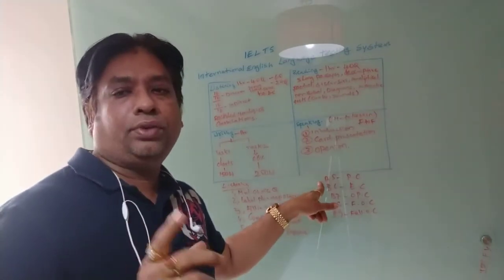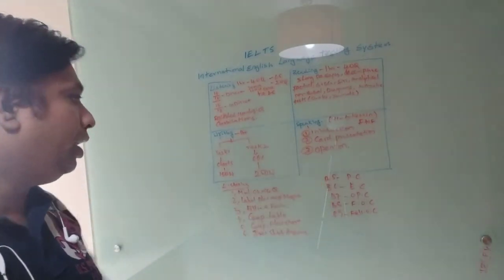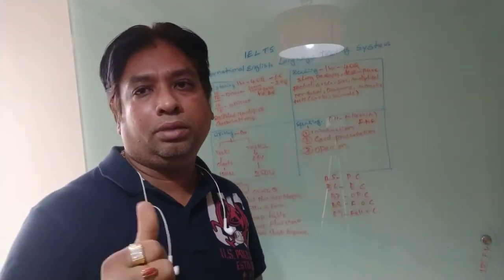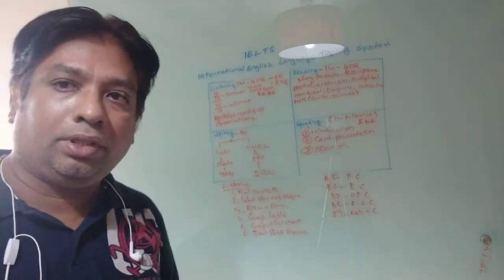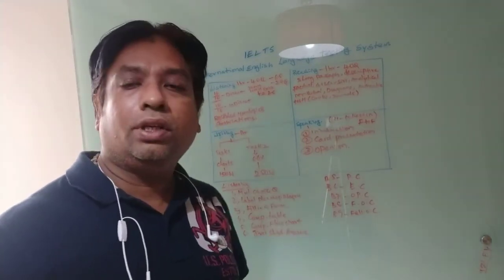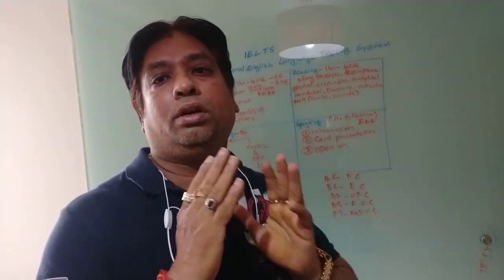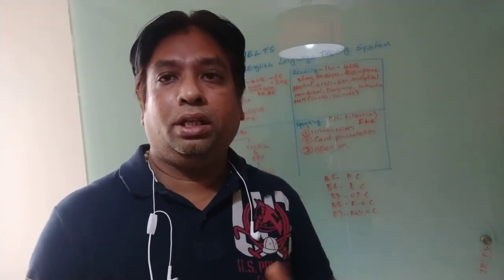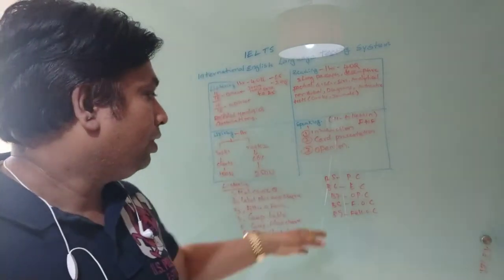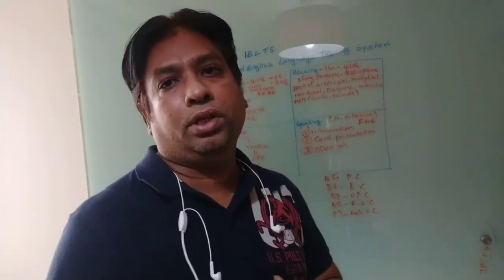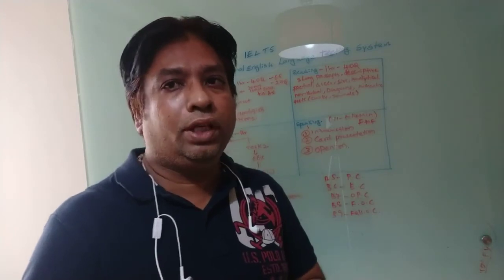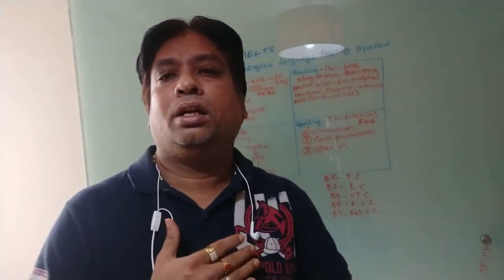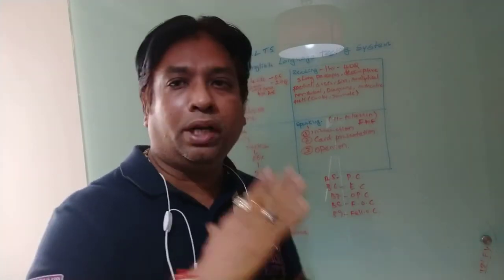Regarding band scores: Band 5 means you have partial command of the language. Band 6 means you have a competent command of English. Band 7 means you have an operational command — you can deal better than Band 6. Band 8 means you have a fully operational command; your language skills are very good and you are comfortable in any situation.